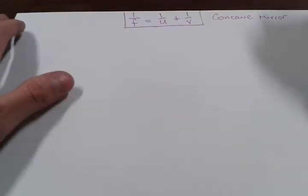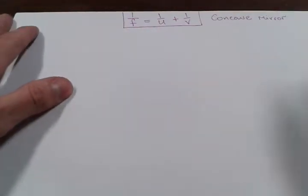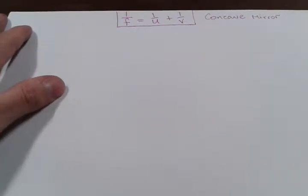Let's look at a simple example of using 1 over F equals 1 over U plus 1 over V for a concave mirror. We're not going to do anything complicated with this one, just a simple example.